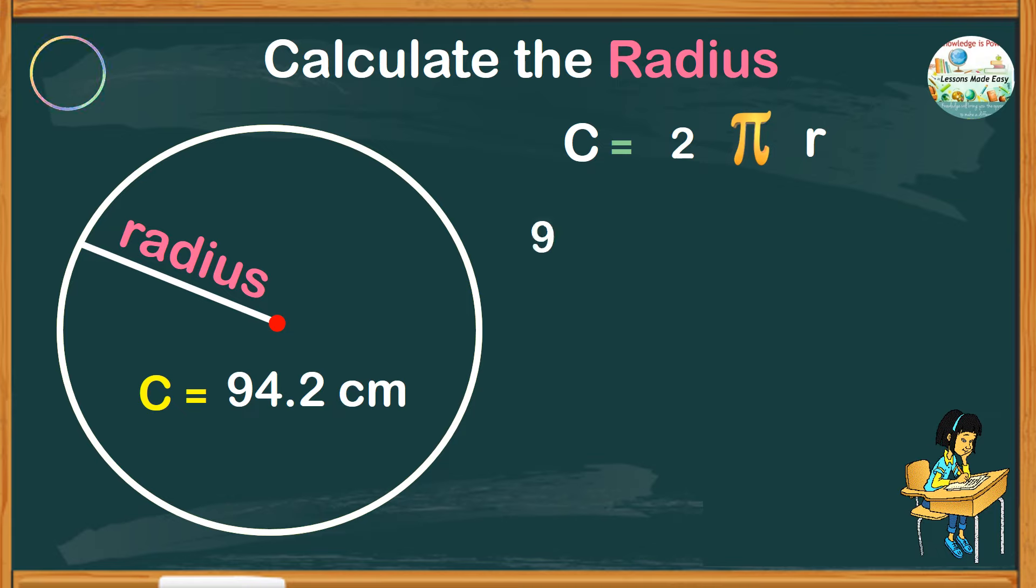The circumference is 94.2 centimeters equals 2 pi r. Let's make the number much smaller by dividing both sides of the equation by 2.